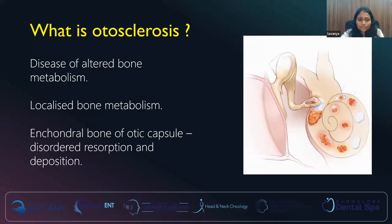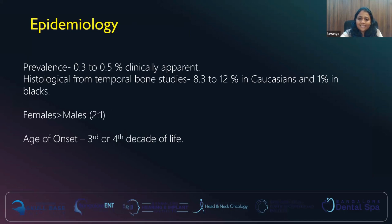So what is otosclerosis? Otosclerosis is a disease of altered bone metabolism, and this altered bone metabolism is a localized phenomenon only to the otic capsule. So only the enchondral bone of the otic capsule is affected in this deranged bone metabolism. This process of disordered resorption and deposition is present clinically in around 0.3 to 0.5% of the general population. But histologically, if you study temporal bones, those yield percentages up to 12%, and in different races the percentages differ.